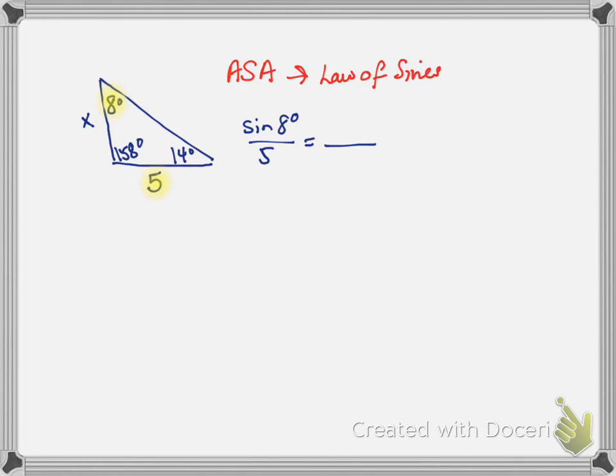and now the only other thing I know or what I want is this side X, and I know the angle across from it is 14 degrees, so I'm going to write that up as sine of 14 degrees over side X. Because these are ratios, I can cross multiply, so I get X times sine of 8 degrees equals 5 times sine of 14 degrees.